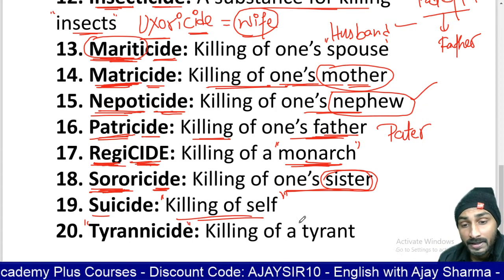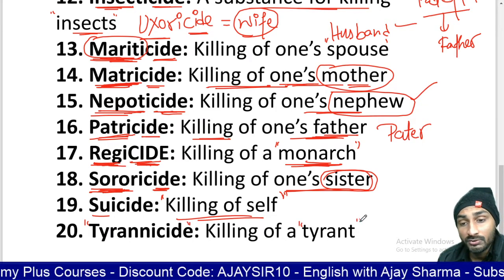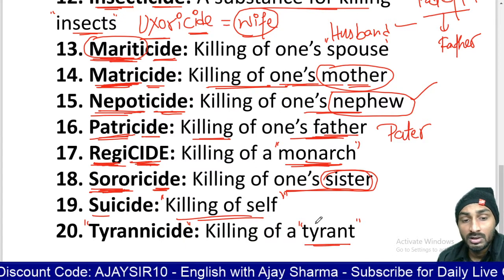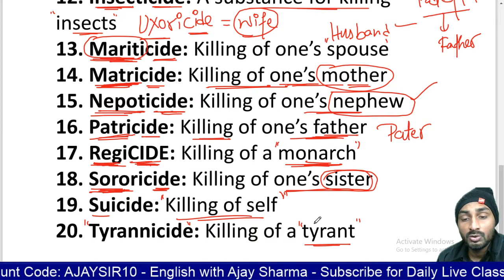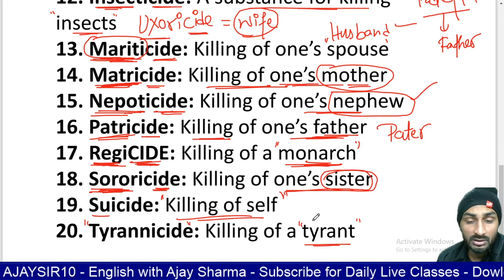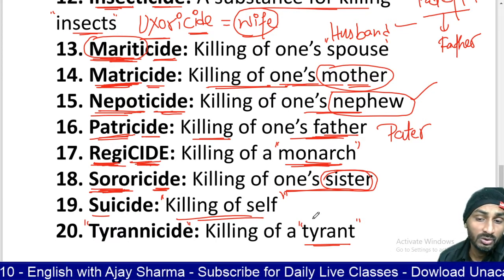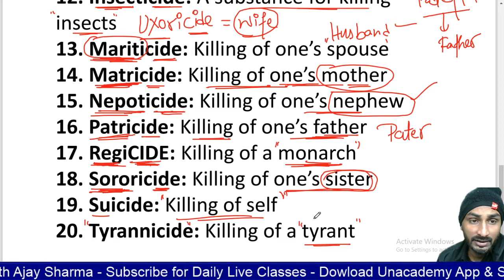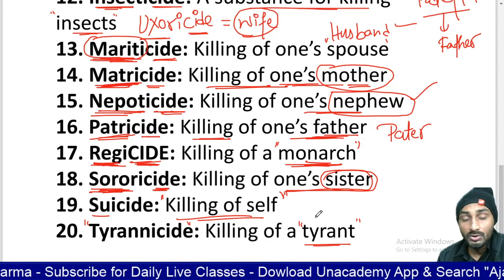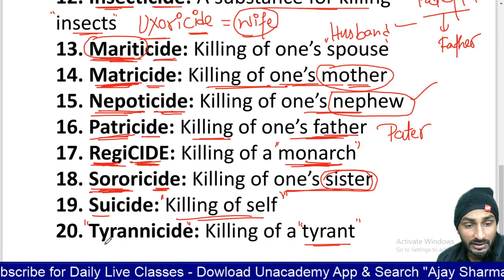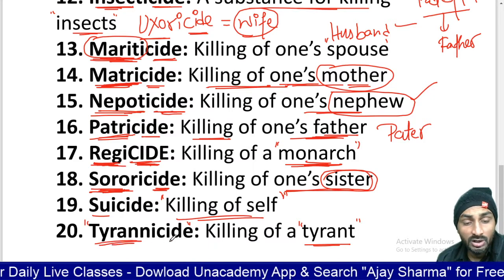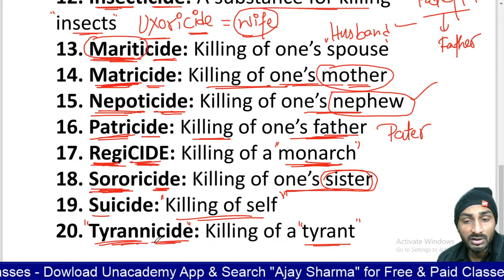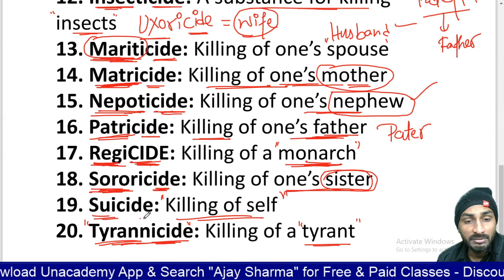Next is tyrannicide. Tyrannicide means killing of a tyrant. A tyrant is a very cruel king — kroor raja. So tyrannicide means killing of a cruel ruler, kroor raja ki hatya.